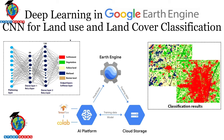Hello everyone, welcome to the Study Hacks Institute of GIS and Remote Sensing. Today, I will discuss deep learning in Google Earth Engine — how we can easily implement CNN for land use and land cover classification. We can integrate Google Earth Engine and TensorFlow using the Python Google Earth Engine API and easily apply different types of deep learning models such as CNN. Today's session I will show you how to apply a convolutional neural network and then make a land use land cover classification map using the Google Earth Engine platform.